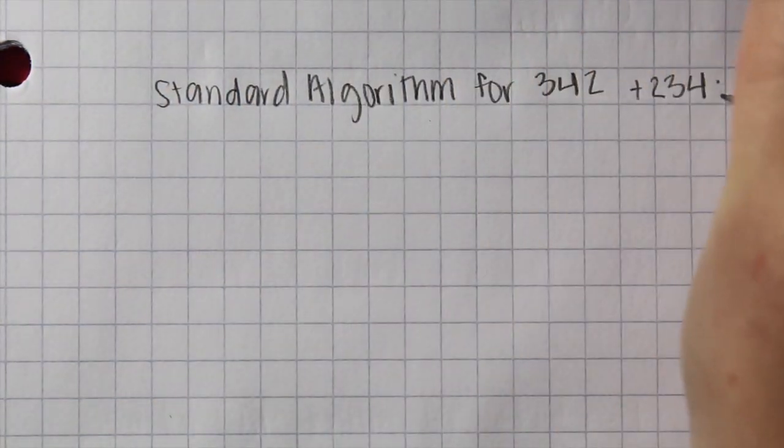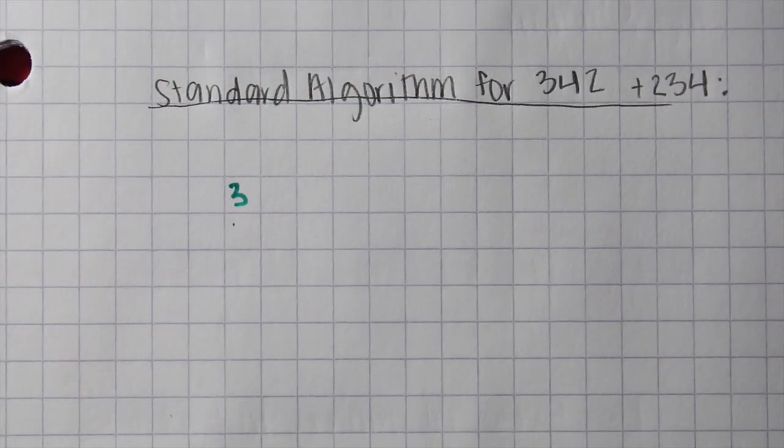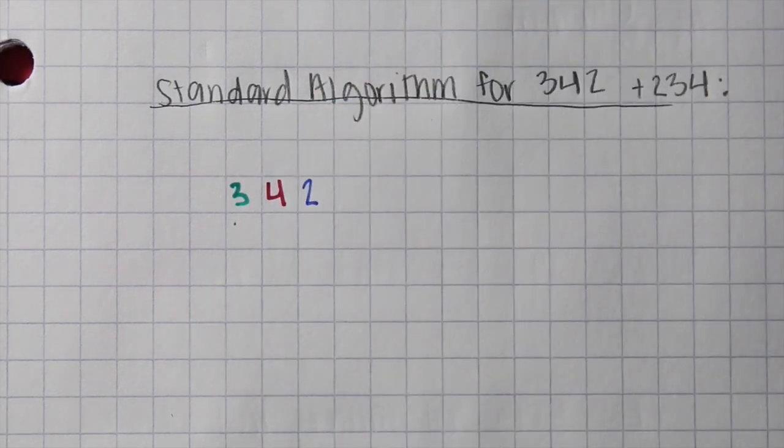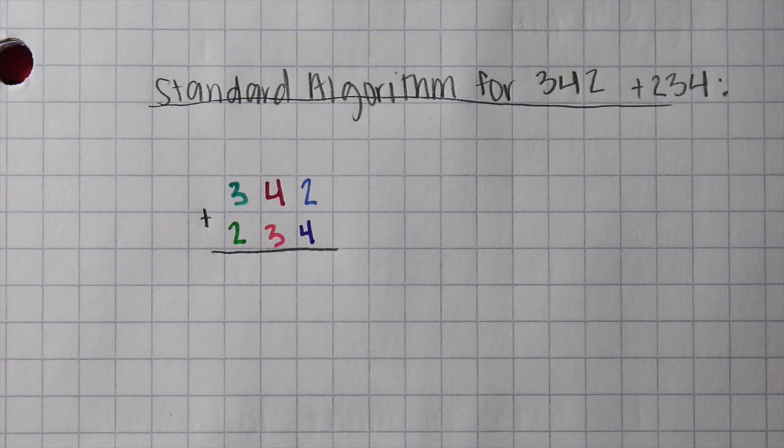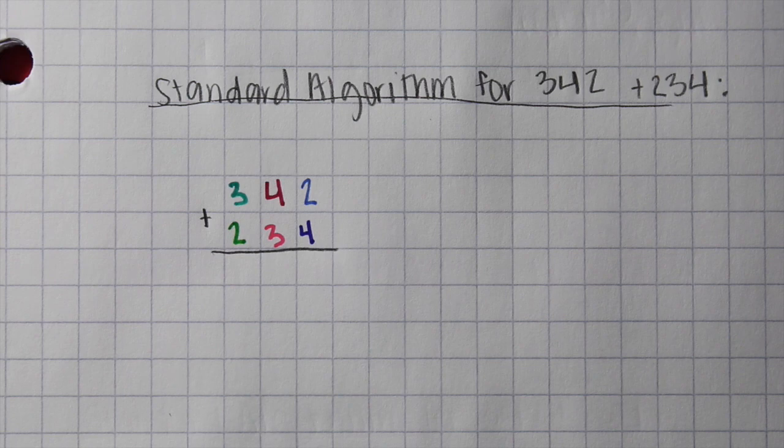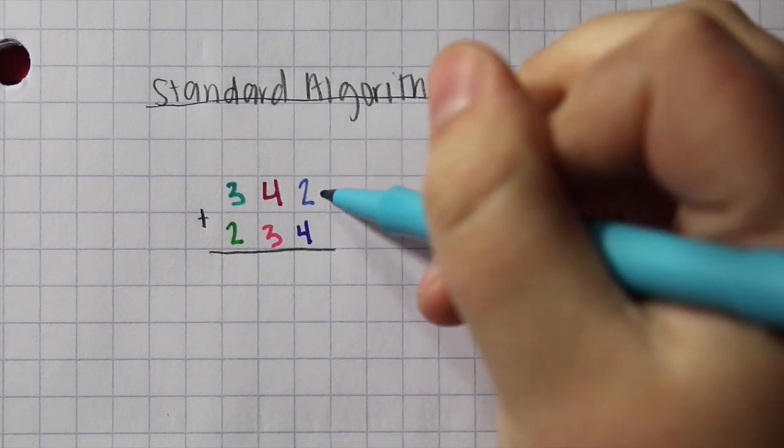Okay, so we're starting our standard algorithm for 342 plus 234, and the first step that I'm doing is color coding my numbers. So 342, 234, each of the values in different colors, and now we're going to begin.